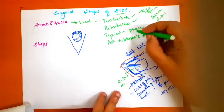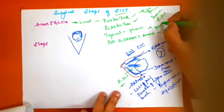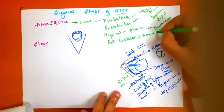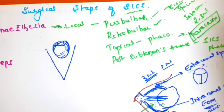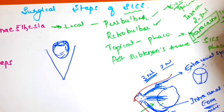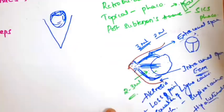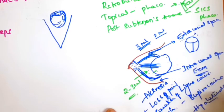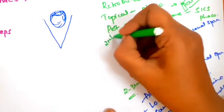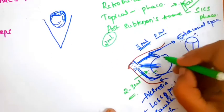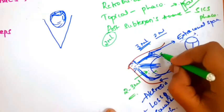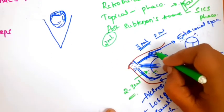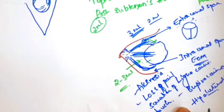In topical anesthesia, proparacaine eye drops are instilled into the conjunctival sac to achieve anesthesia — only loss of sensation is achieved and ocular movements are still present. In subtenons, the same anesthetic agent of lignocaine or bupivacaine, around 2ml, is taken and after making a conjunctival flap and pocket, the anesthetic agent is injected into the subtenons space.